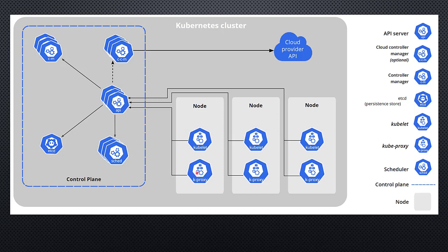Kubernetes proxy is the networking side of all this — anything where we're doing networking, that's what kproxy is for. What's not pictured here but also has to be present is some sort of container controller — typically Docker is also in a node. Between all of these, these are all the different parts of a Kubernetes cluster.